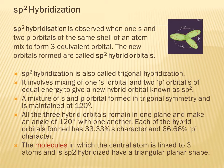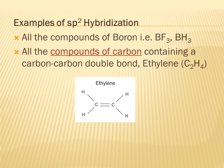Each of the sp2 hybrid orbitals formed has 33 percent s character and 66 percent p character. Molecules in which the central atom is sp2 hybridized have a triangular planar shape. Examples of sp2 hybridization include all compounds of boron like BF3 and BCl3, and all compounds of carbon containing a carbon-carbon double bond, such as ethylene.